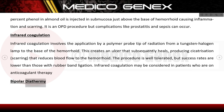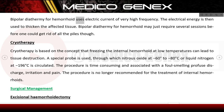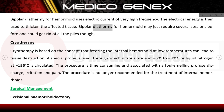Bipolar diathermy for haemorrhoids uses electric current of very high frequency. The electrical energy is then used to thicken the affected tissue. Bipolar diathermy may require several sessions before one could get rid of all the piles.